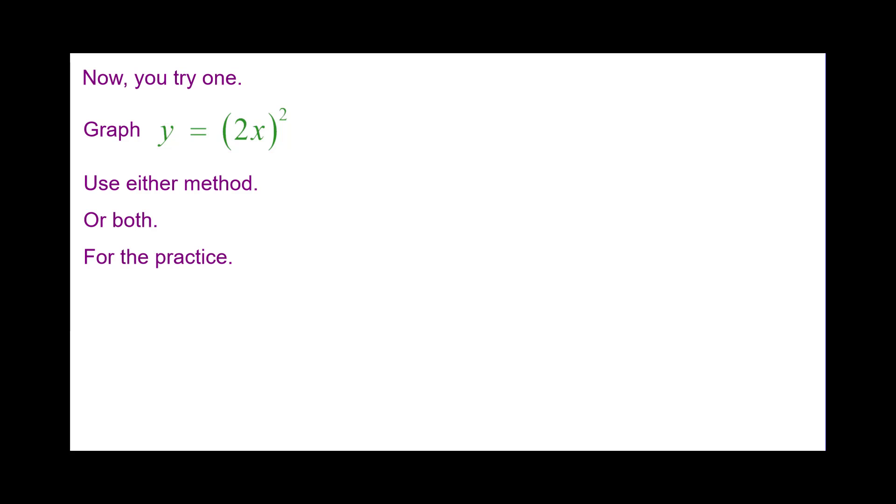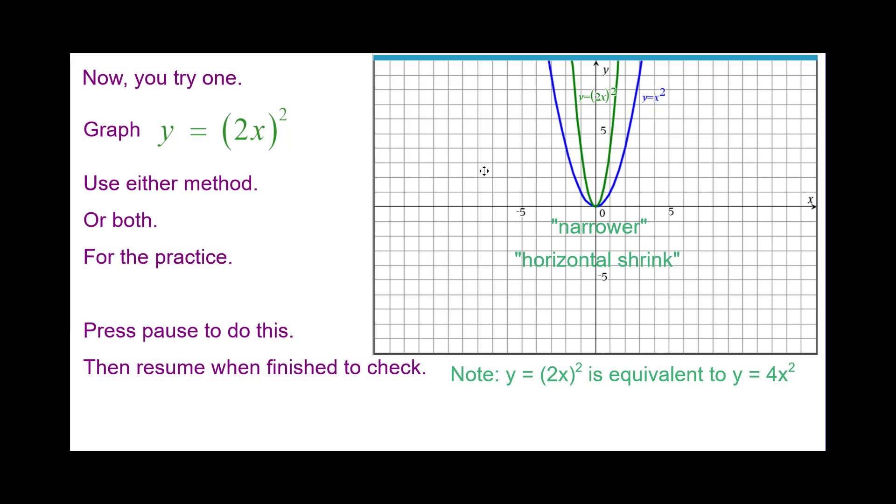Now you try one. Graph y equals the quantity of 2x squared. Use either method or both for the practice. Press pause to do this and resume when you're finished to check your answer. And here is that answer. Notice the green graph is narrower. This is an example of a horizontal shrink and that these are equivalent.